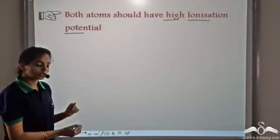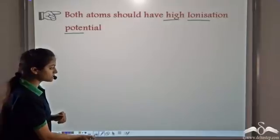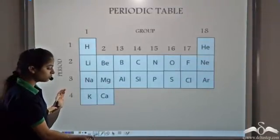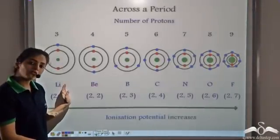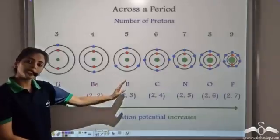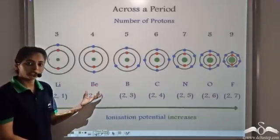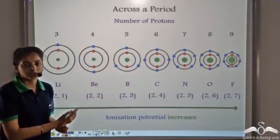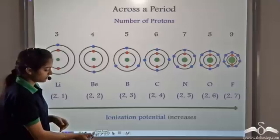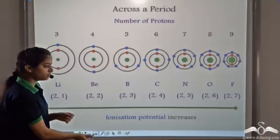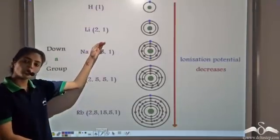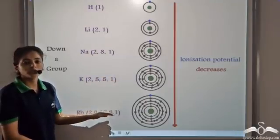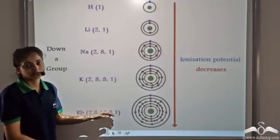Let's see how ionization potential varies in a periodic table. When we move from left to right in a periodic table, the ionization potential increases. And when we move from top to bottom in a group, the ionization potential decreases.